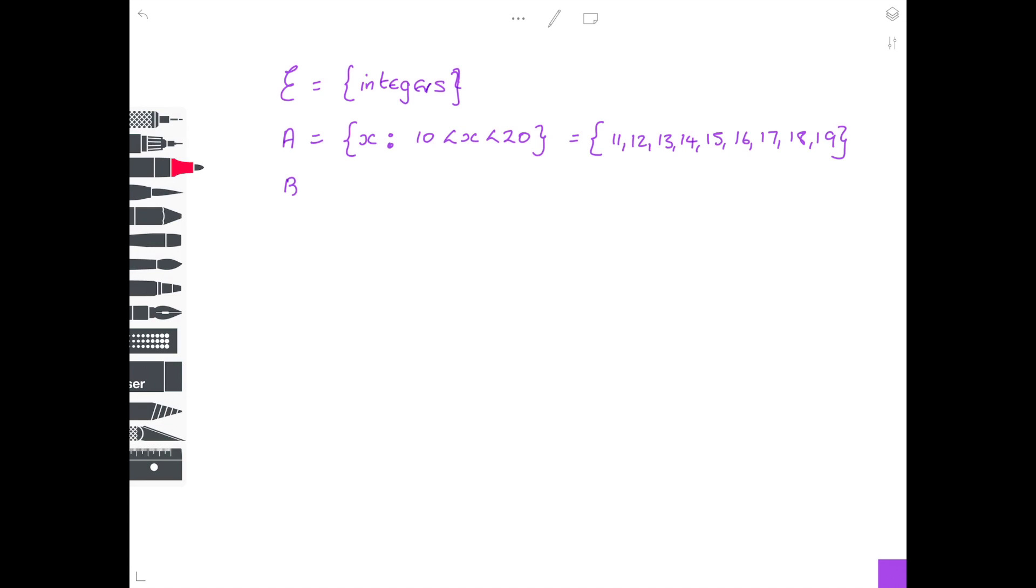Same sort of thing again. Let's define the set B. This time we're saying B is the set of numbers x such that x lies between 5 and 12, written as B = {x : 5 ≤ x ≤ 12}. This time we are including the number 5 and we are including the number 12. The universal set is still integers, so we don't have to worry about fractions and decimals. So the elements of B are {5, 6, 7, 8, 9, 10, 11, 12}.